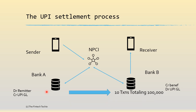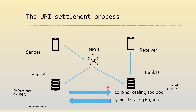Let's take an example where in a settlement cycle there were 10 transactions from Bank A to Bank B totaling ₹1,00,000 INR, and similarly Bank B sends around 5 transactions totaling ₹60,000. In this scenario, for the cycle, Bank B owes Bank A around ₹40,000 INR. So how does this settlement happen?